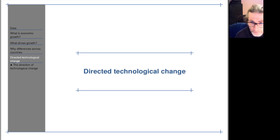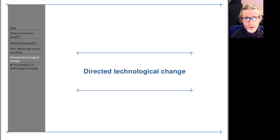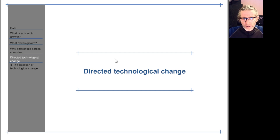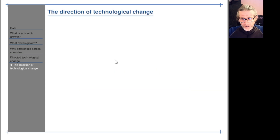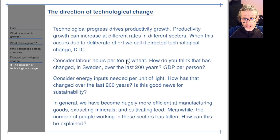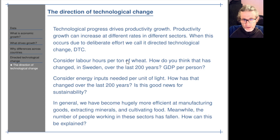This is the final video of the module on technological change and growth, and it's about directed technological change. What do we mean by the direction of technological change? Technological progress drives productivity growth. Productivity growth can go at different rates in different sectors. When this occurs due to deliberate effort, we call it directed technological change, or DTC.